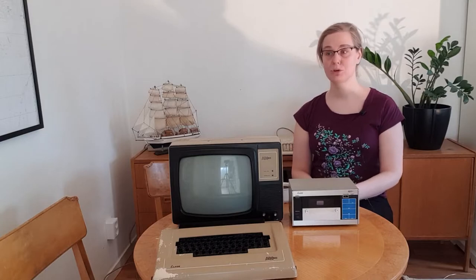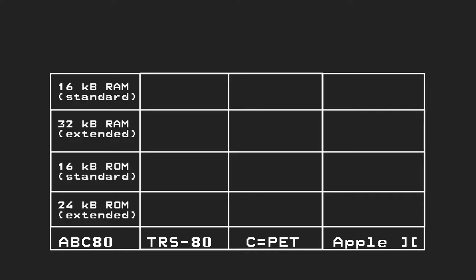But first some corrections. In the original video I claimed that the ABC80 had 32 kilobyte of onboard RAM. That is however not true. It came with 16 kilobyte RAM as standard. You could expand it via installing more memory, a memory card inside the computer, and then you can further extend it one more time with an external memory expansion. So all in all it could come up to 32 kilobyte of RAM.